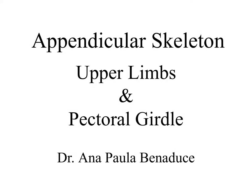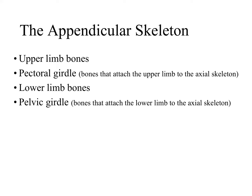Hi guys, here is Dr. Bernaduce. In this lecture, we will look at the appendicular skeleton, specifically the upper limbs and the pectoral girdle. We have 126 bones making up the appendicular skeleton, divided into two groups: the bones making up the limbs themselves — upper limb bones and lower limb bones — and the bones that attach the limbs to the axial skeleton. The bones attaching the upper limb are the pectoral girdle bones, and those attaching the lower limb are the pelvic girdle bones. We will start studying the upper limb bones now.